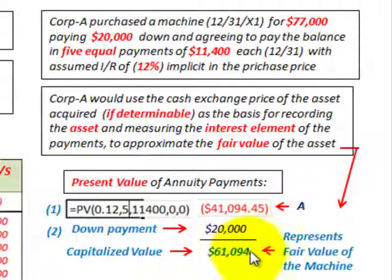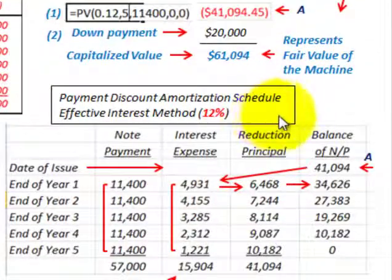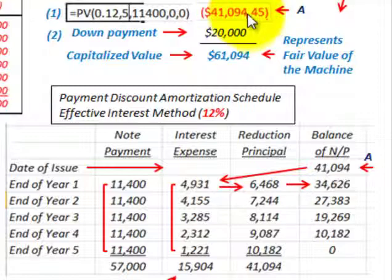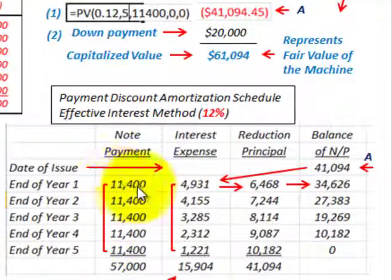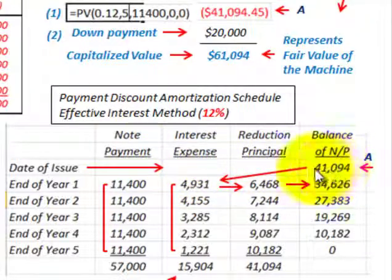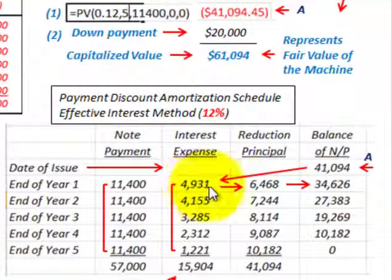Now we have to determine the interest element in these payments and set up an amortization schedule using the effective interest method at twelve percent. Our beginning balance is forty-one thousand ninety-four dollars — the present value of the annuity payments. Each year's payment is eleven thousand four hundred dollars. For year one, take forty-one thousand ninety-four dollars times twelve percent, which gives us interest expense of four thousand nine hundred thirty-one dollars.